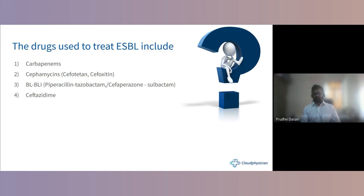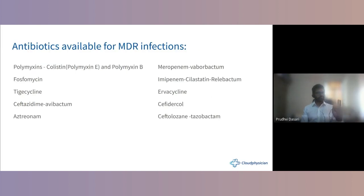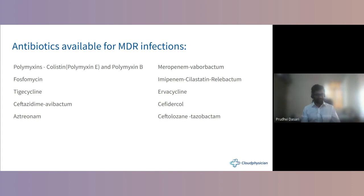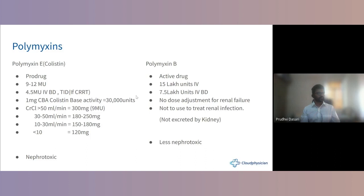Antibiotics at our disposal for MDR organisms include: polymyxins, fosfomycin, tigecycline, ceftazidime-avibactam, and aztreonam. Newer agents available in Europe and the US but not yet freely available in India include meropenem-vaborbactam, imipenem-cilastatin with relebactam, eravacycline, cefiderocol, and ceftolozane-tazobactam. The polymyxins — colistin (polymyxin E) and polymyxin B — are the backbone of therapy in India.